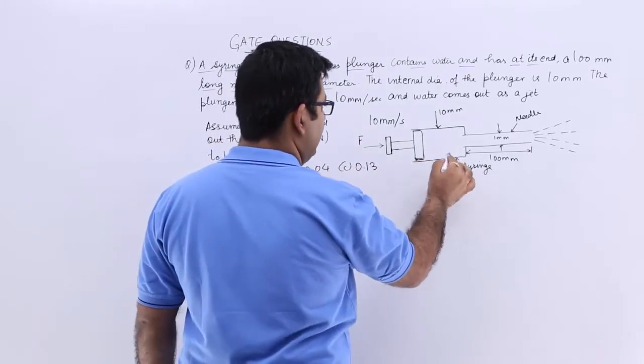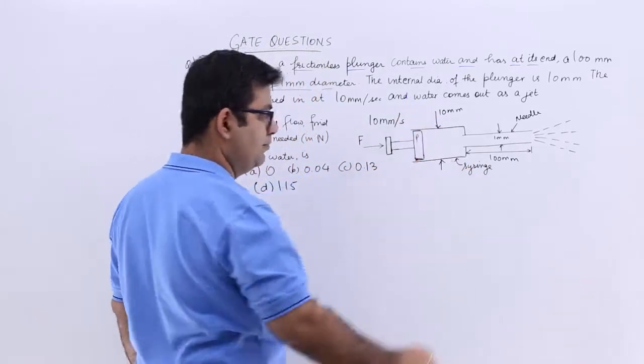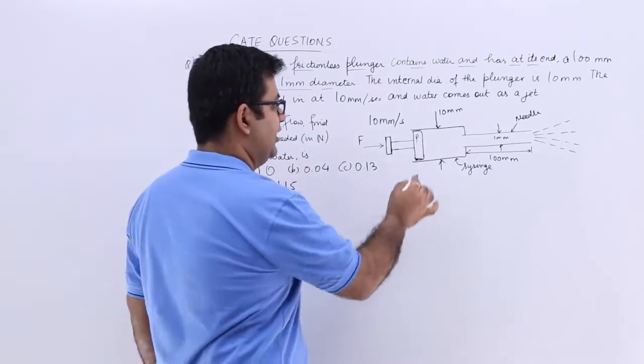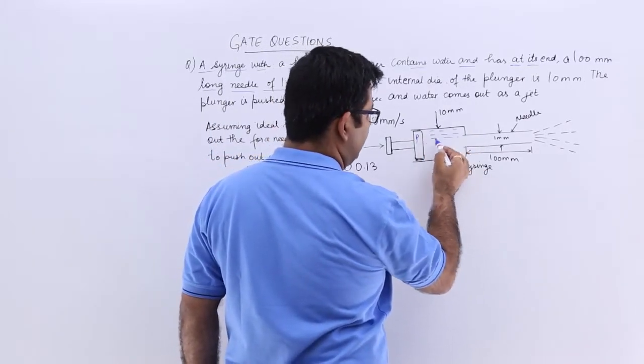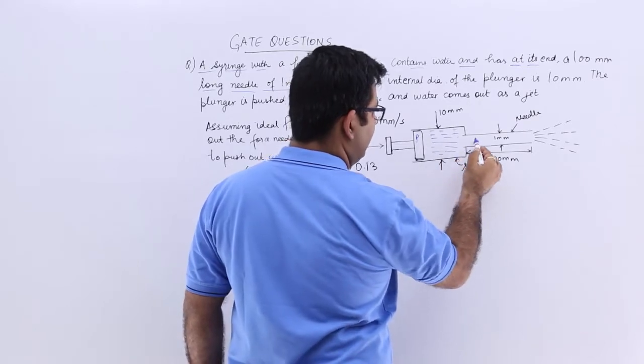So this is the plunger. This is the syringe. In this syringe we have water like this and this is the needle.